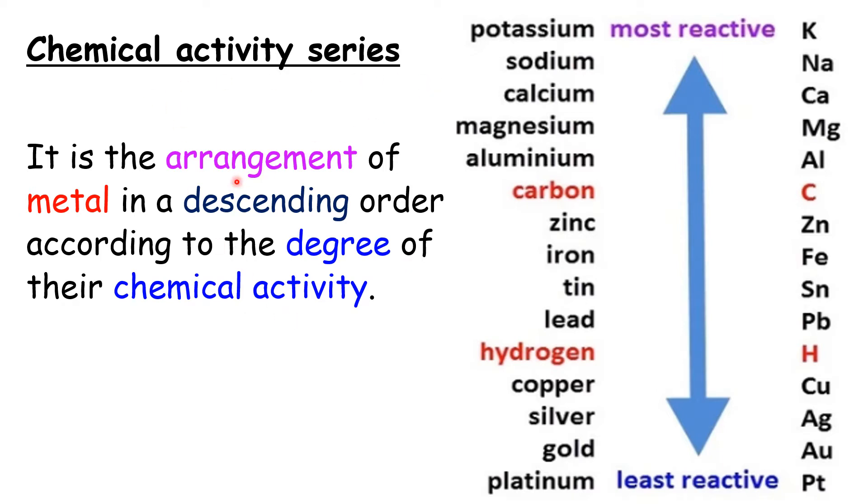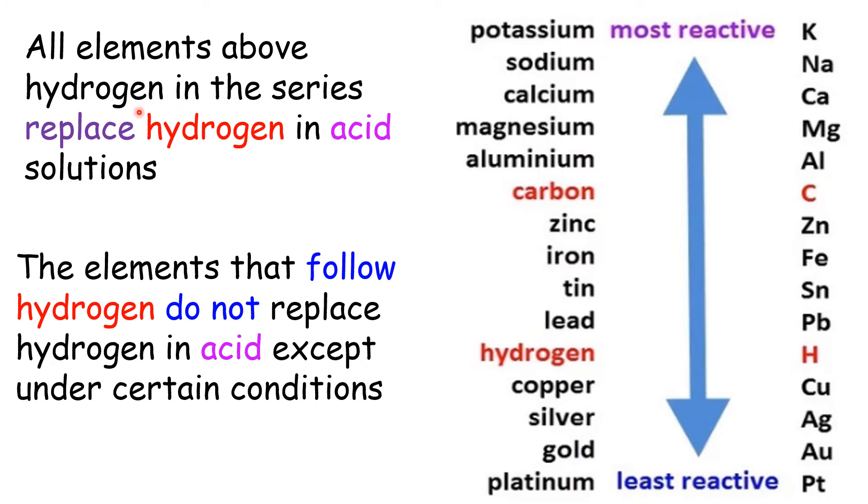It is the arrangement of metal in a descending order according to the degree of their chemical activity. All elements above hydrogen in the series replace hydrogen in acid solution. All of these metals can replace hydrogen in acid solution.